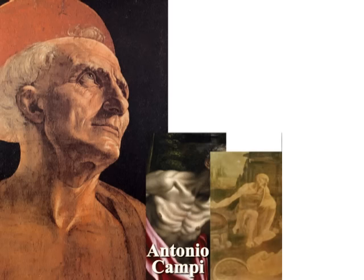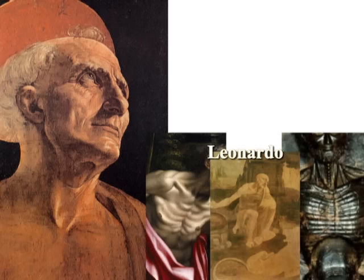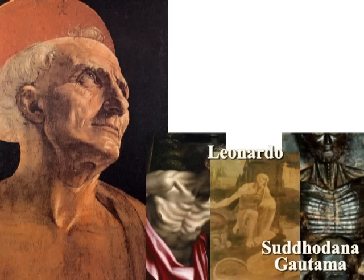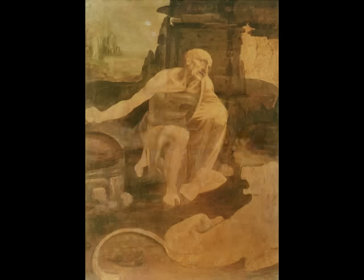結論を出す前に、もう一度セント・ジェロームの絵を比較してみてください。アンドレア・デル・ベロキオの描いたセント・ジェローム、アントニオ・キャンピのセント・ジェローム、レオナルド・ダ・ヴィンチのセント・ジェロームです。ベロキオとダ・ヴィンチの描いたセント・ジェロームは酷似しています。右がガンダーラブツです。頭が混乱しますが、私、林博史の結論を話します。